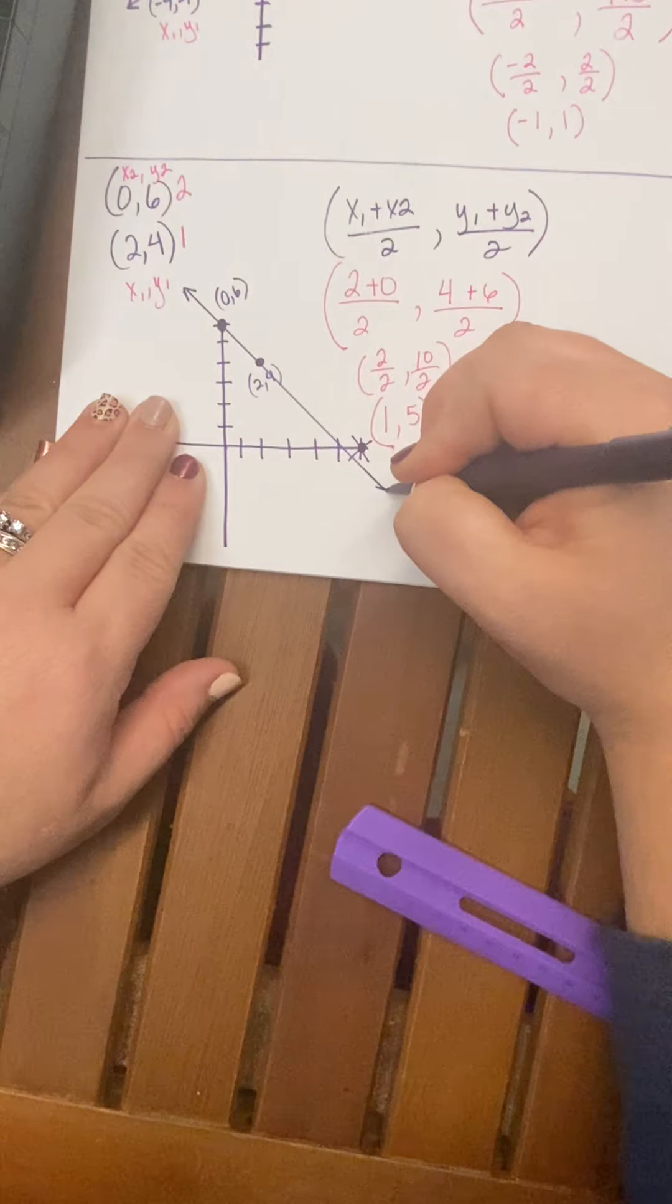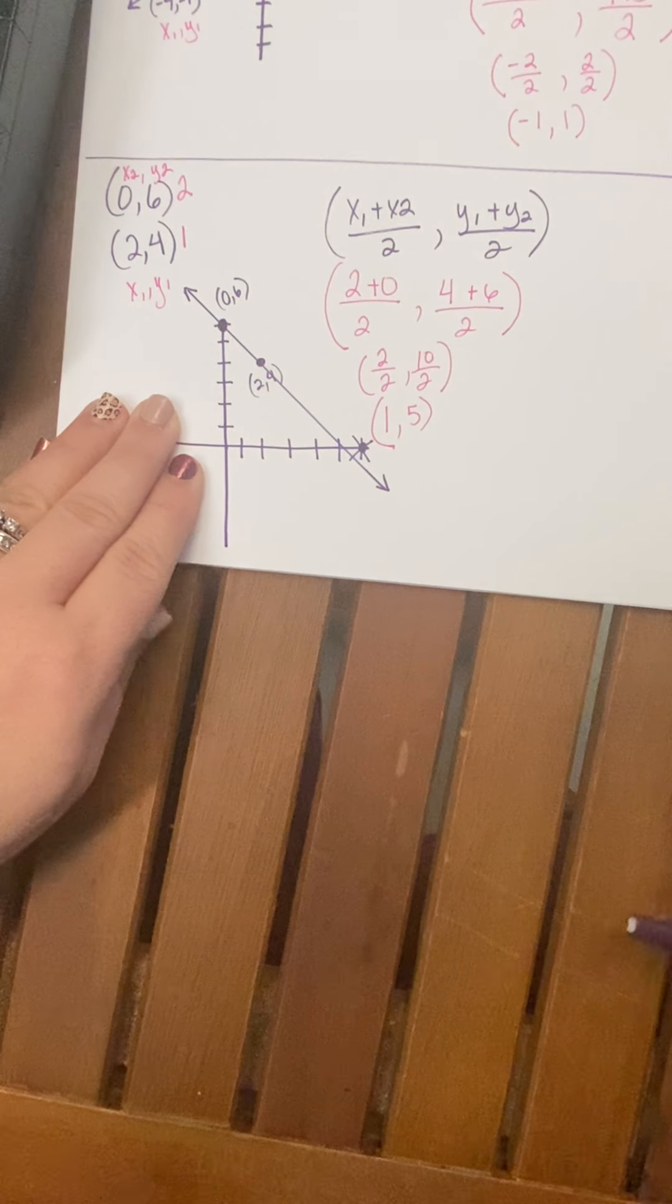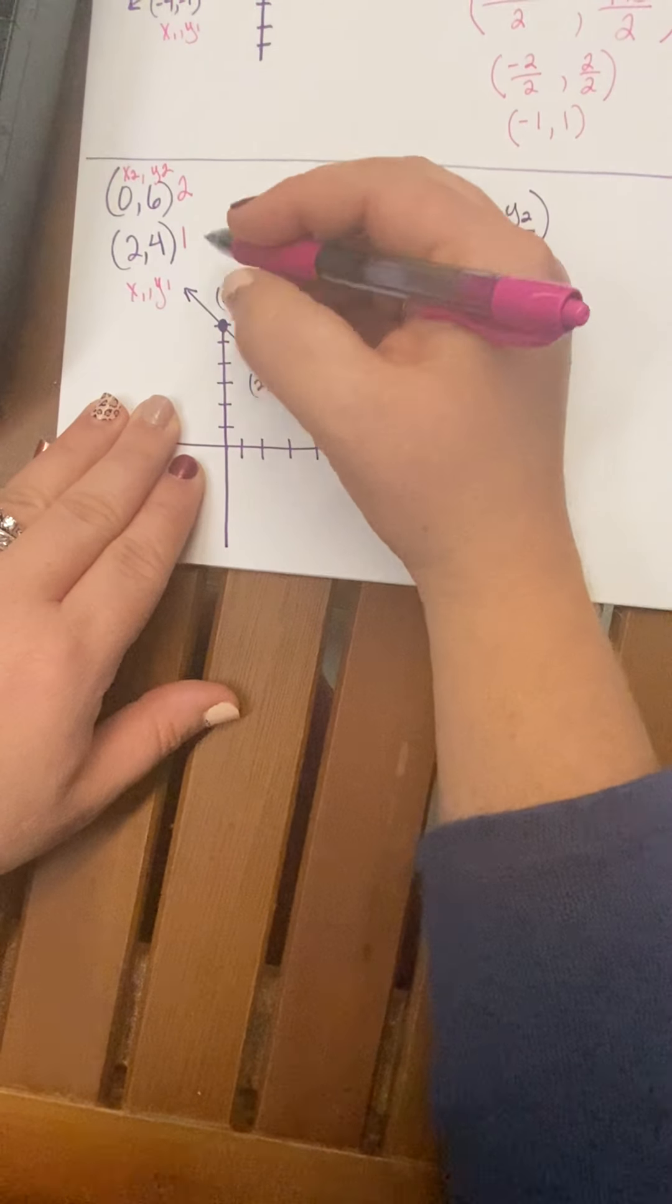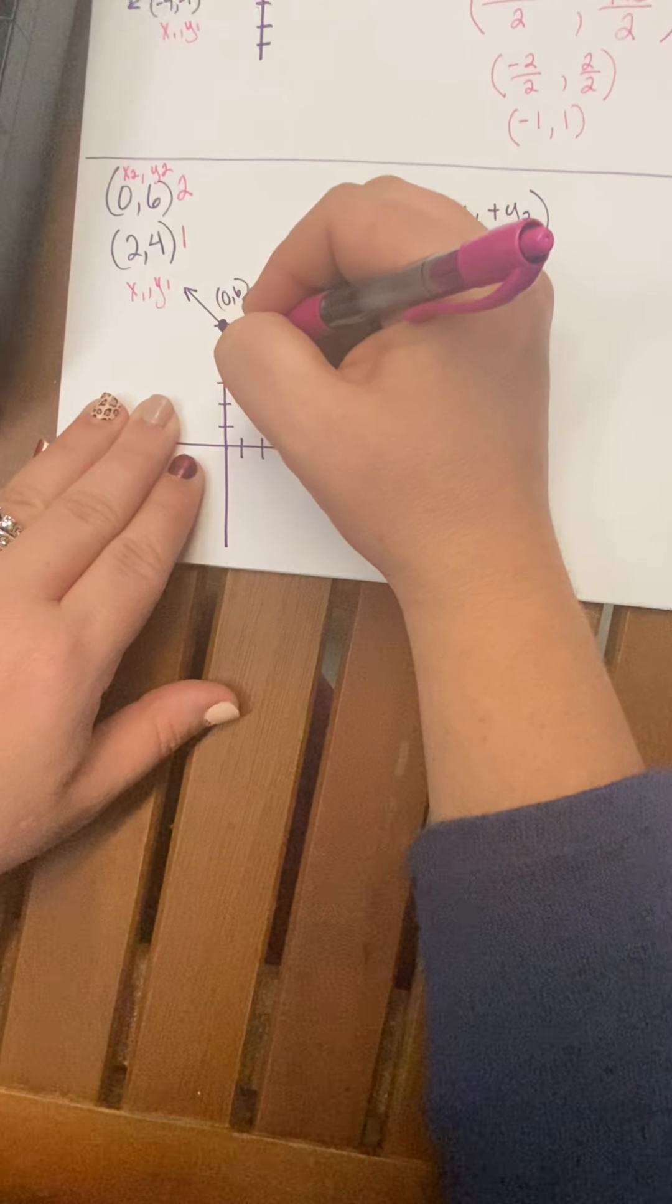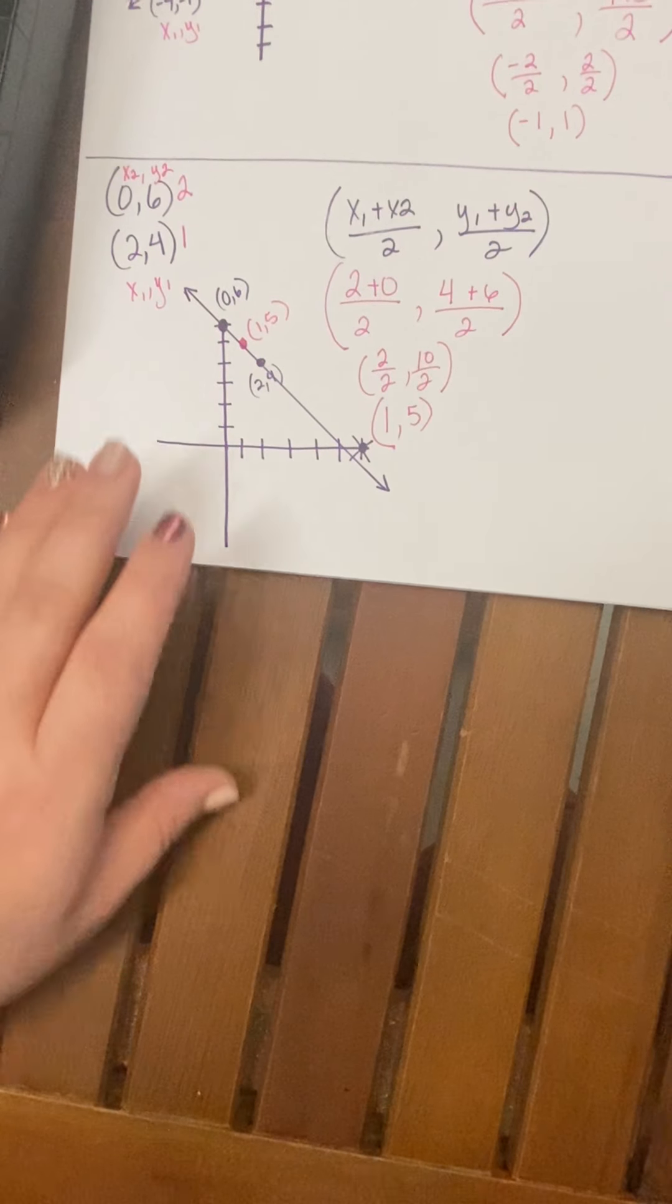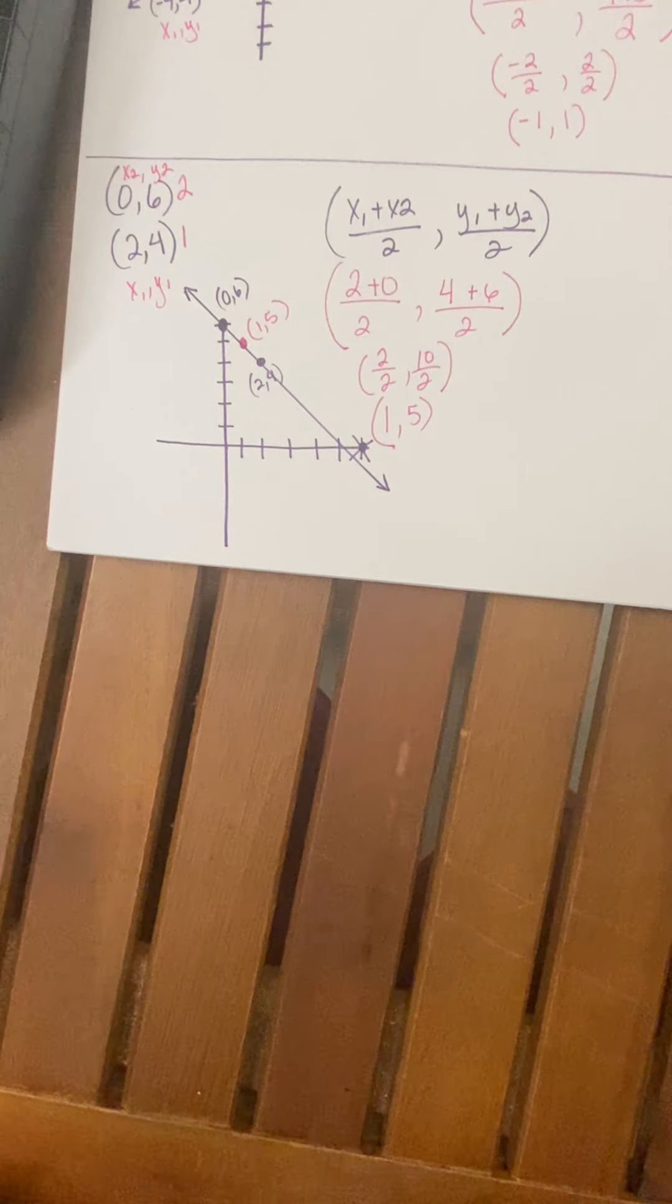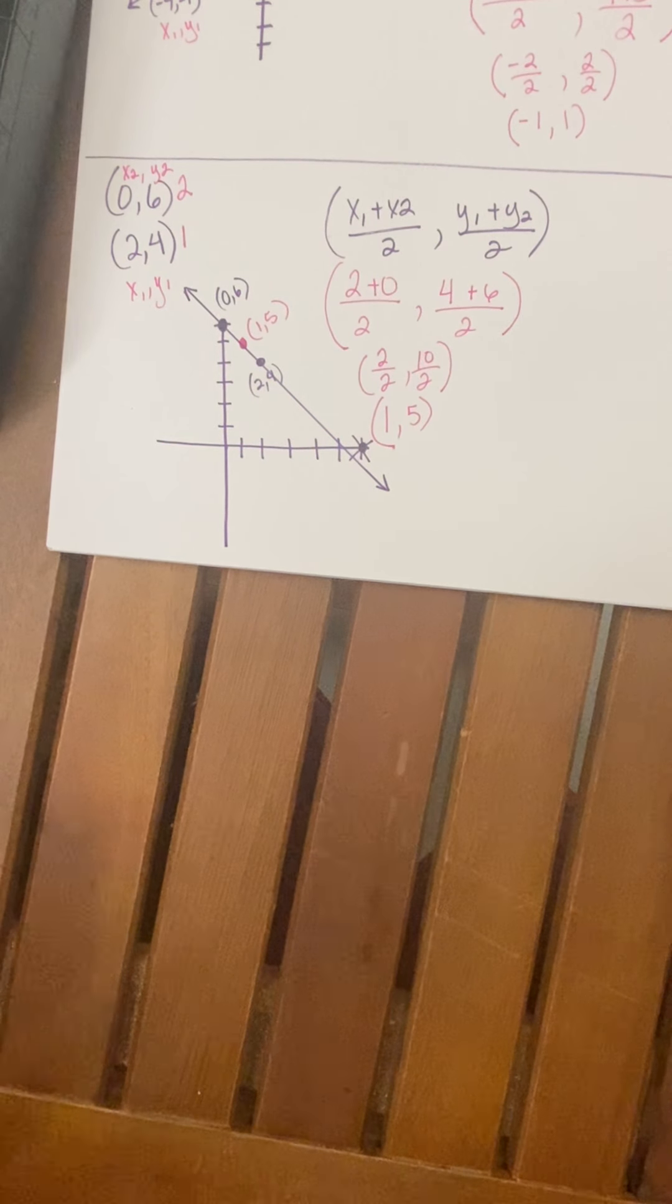And I'm going to draw my line. Remember, lines have arrows on both ends because they go in the opposite directions forever. And then my 1, 5. Look there. Right there it is. Right there on that line. So, and it is in the middle. Hence the name midpoint. Right? So that's midpoint.